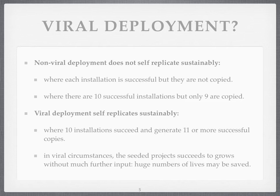Viral deployment self-replicates sustainably. If you put 10 installations into different places around the world — and that's the ambition of this project, to put 10 installations across ideally three different continents — it would generate at least 11 successful copies very quickly, and it would double well within a year. Doubling the numbers, and how fast it doubles, is of course the key thing to these exponential-type growth problems. In viral circumstances, the seeded projects — those 10 — succeed and grow without much input. Huge numbers of lives may be saved. All that is needed is a simple technology without barriers to getting the parts together, getting it working, and keeping it working. And then it gets copied.